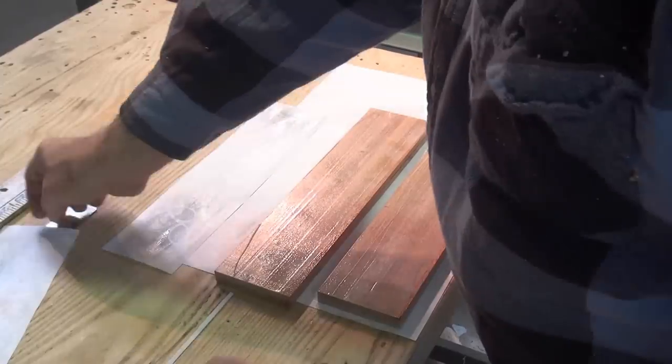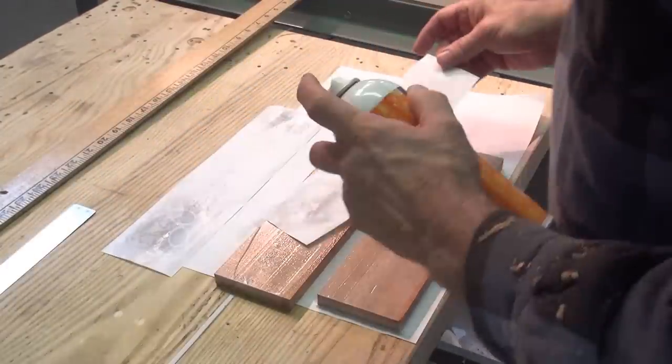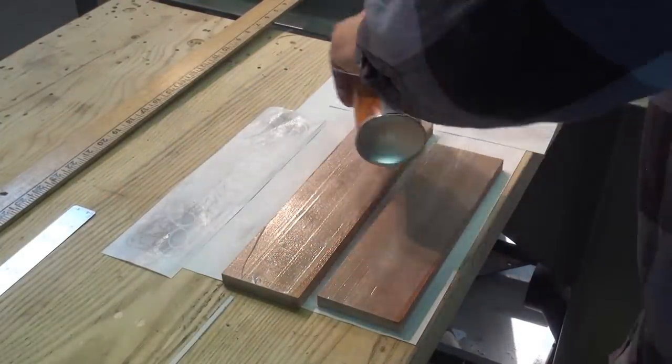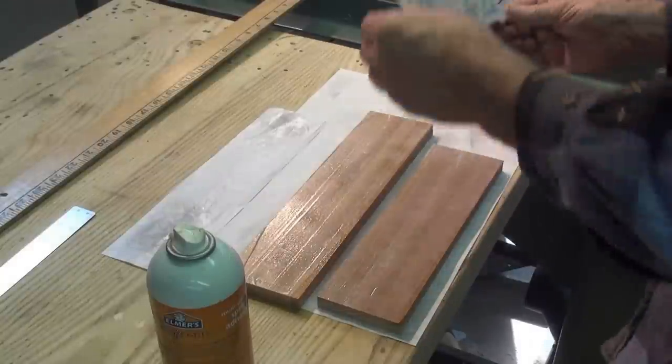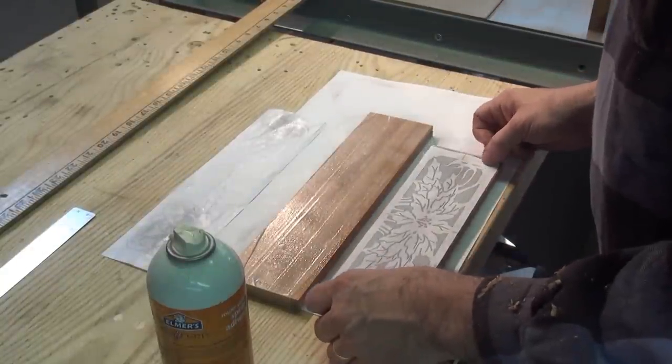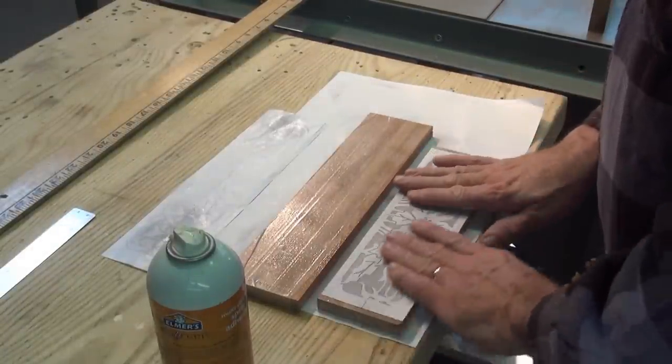Before I glue the patterns on I cover the wood with clear packing tape. This prevents the glue from getting inside the grain. Then I will stack cut the parts two at once. I tape the parts together.